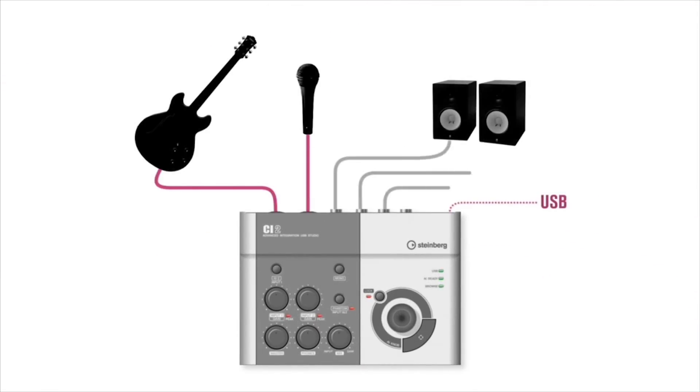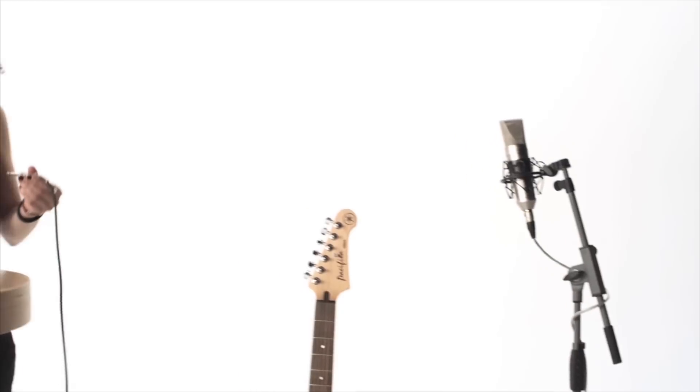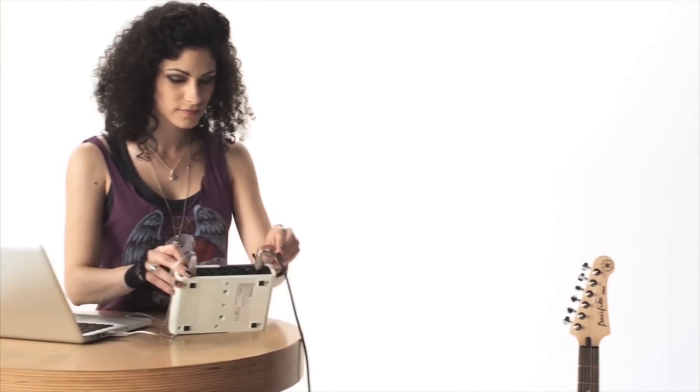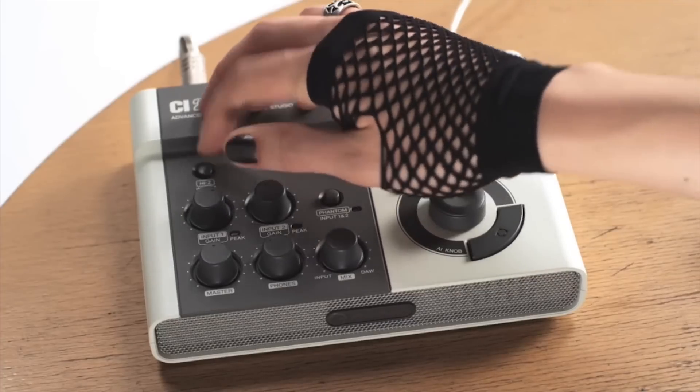Now, the CI2 way of setting up guitar, vocal or instrument recording is absolutely easy. If you're a guitar player, plug in the guitar cable, press Hi-Z and adjust the input gain.